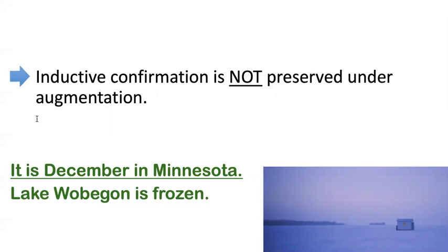Here's an argument that's not deductively valid: let's say I tell you it's December in Minnesota, so Lake Wobegon is frozen — presuming the background knowledge that Lake Wobegon is in Minnesota. Now this is an inductively good argument, because if you've ever been to Minnesota in the winter, it's freezing cold and the lakes all freeze. There's so much ice fishing going on — people drive their one-ton trucks onto the ice, it's so thick, to build sheds and do ice fishing. The lakes freeze deeply; Lake Wobegon freezes every single winter. So this is a very good inductive argument — highly likely, highly well-confirmed.